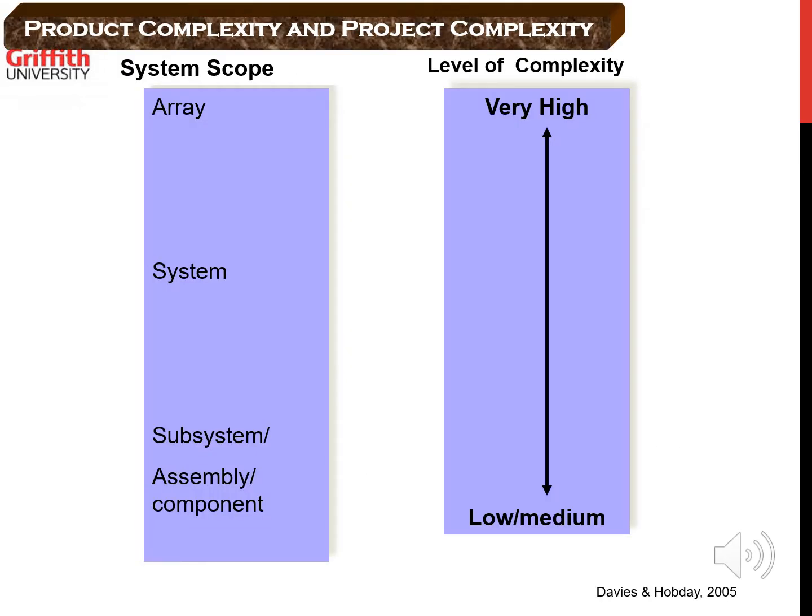Projects have three levels of complexity related to the scope of the system: assembly projects, system projects, and array projects. Each of these types of projects is associated with a different degree of complexity, as you can see in this slide.